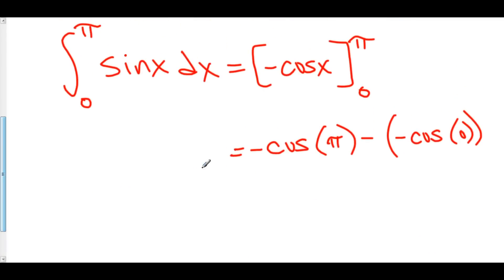Furthermore, cos of pi is negative one, negative negative one is positive one, cos of zero is positive one, minus negative is positive one, so this is one plus one equals two.